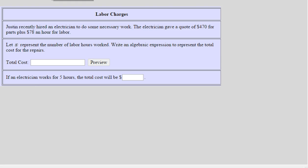Let's read through the example while highlighting important information and our goal. Justin recently hired an electrician to do some necessary work. The electrician gave a quote of $470 for parts plus $78